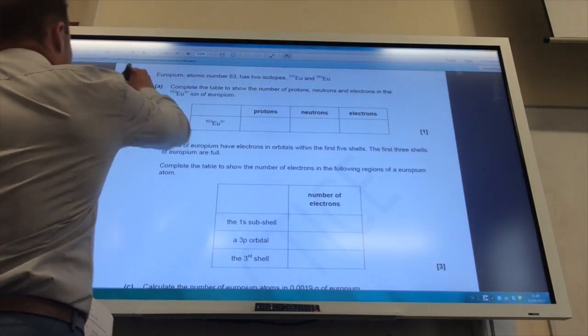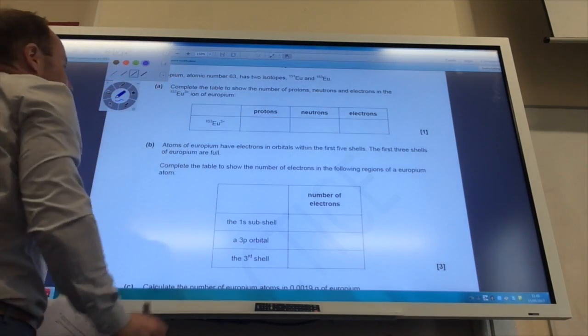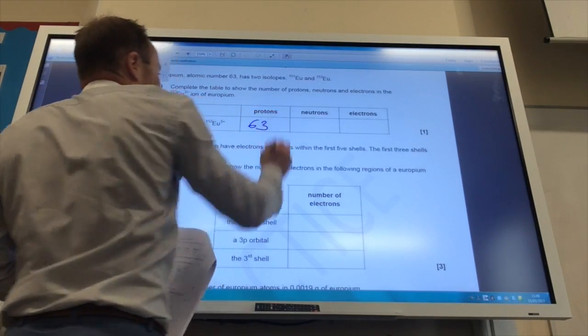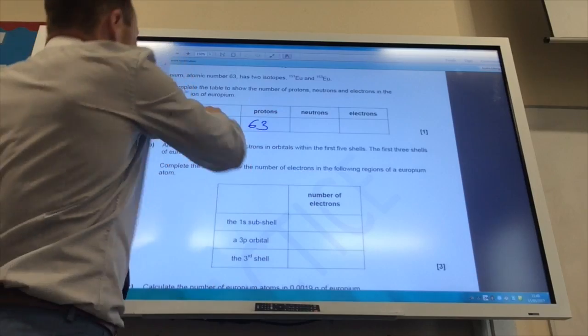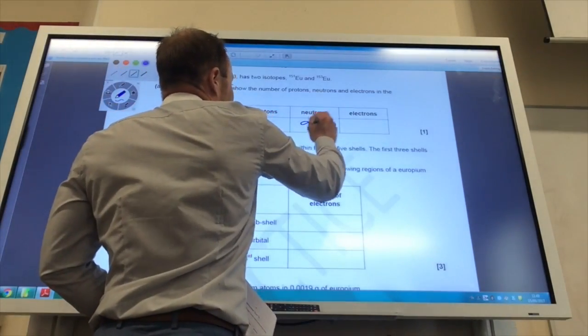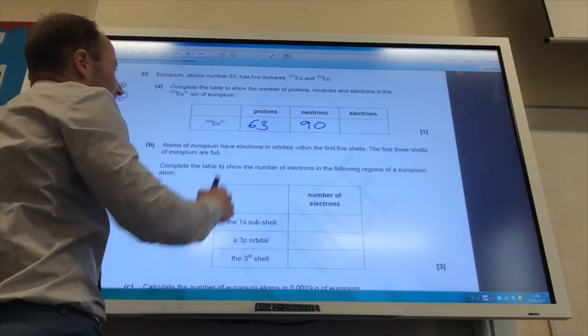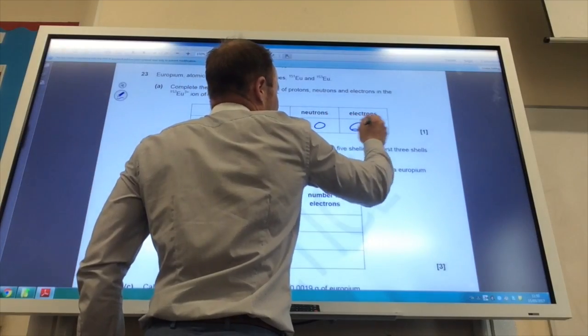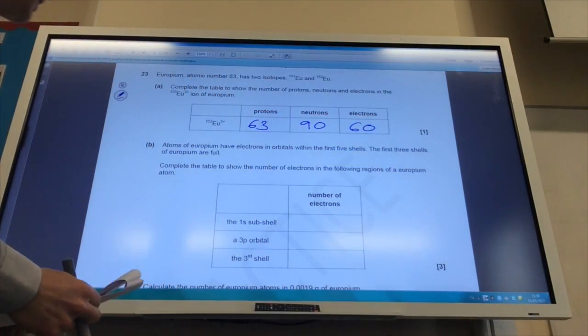Right, so we're back to atomic structure now. If you look at your periodic table, you'll be able to see that europium has 63 protons. 153 minus 63 gives you the number of neutrons, which is 90. And because it's the europium 3 plus ion, it's got three fewer electrons than protons, so it's got 60 electrons.